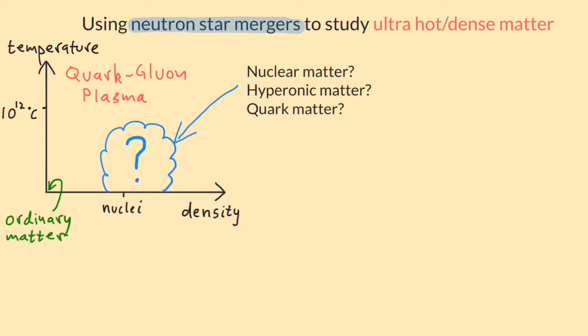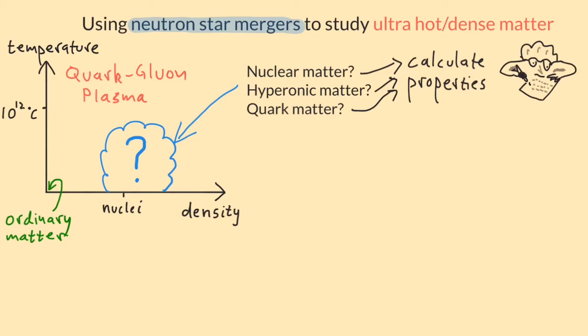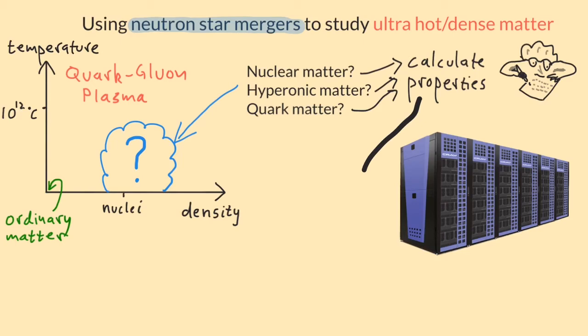That means we need to make predictions of what a merger would look like for different forms of matter and compare those predictions with what the astronomers actually find when they observe neutron star mergers. So what we need to do is for every form of matter that we guess might be created in mergers, we need to calculate what properties that matter would have. We then feed that information into a big computer and simulate a merger with that type of matter. It tells us what would happen, what the astronomers should see.